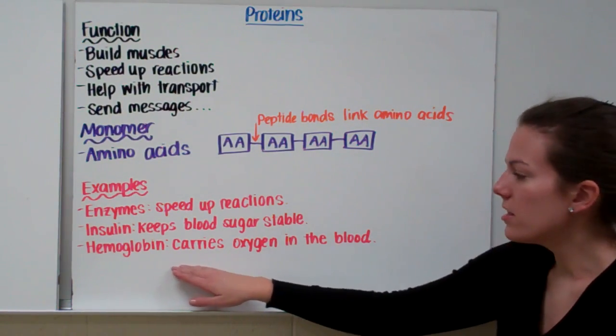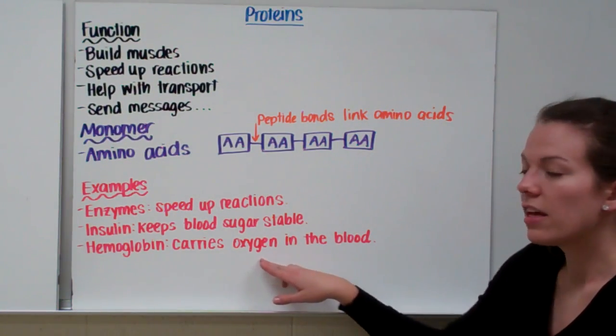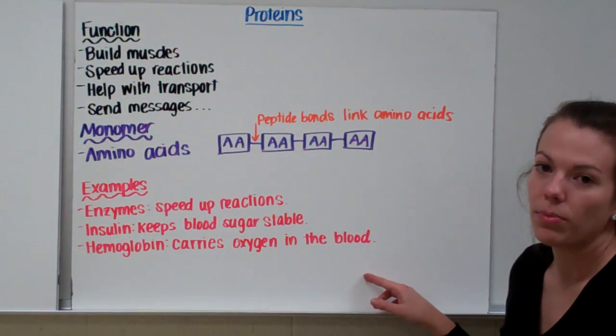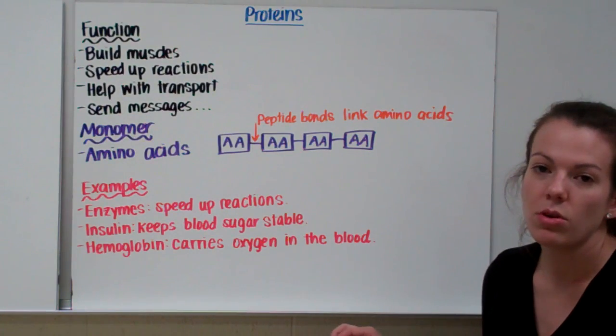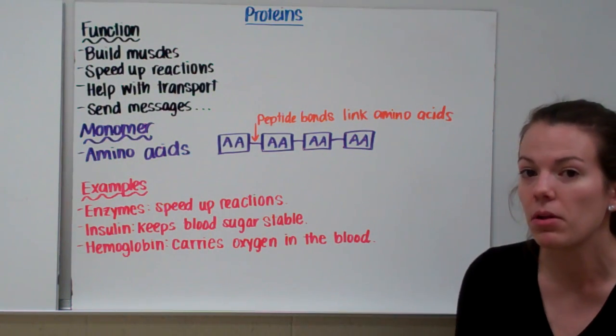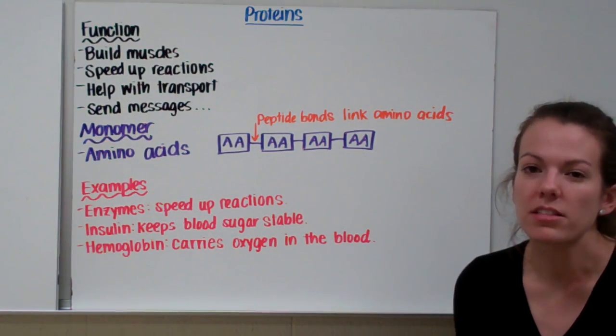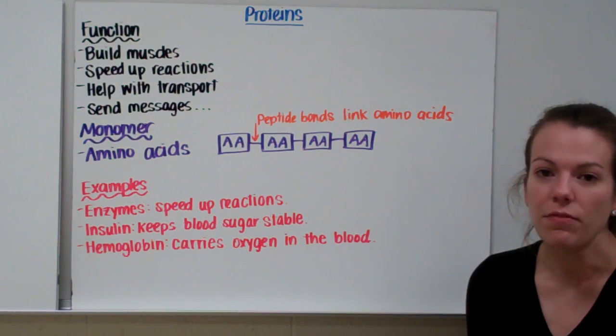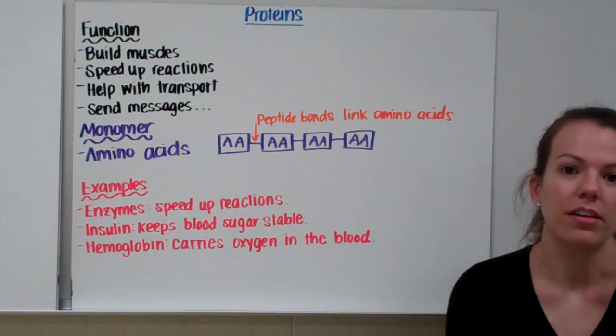Hemoglobin is a special protein that carries oxygen in your blood. If you don't have enough hemoglobin, your body is going to be low on oxygen. That's it for our organic molecules.